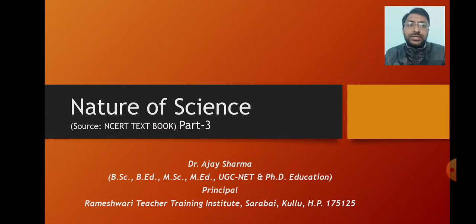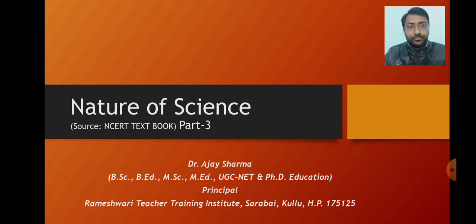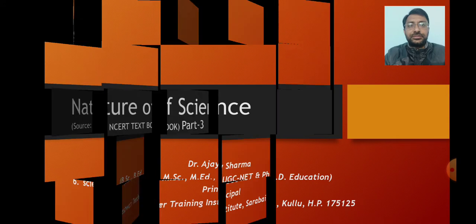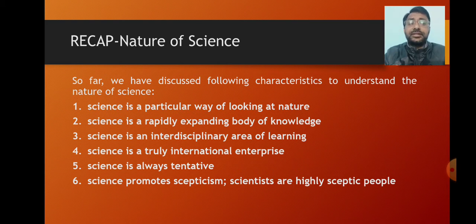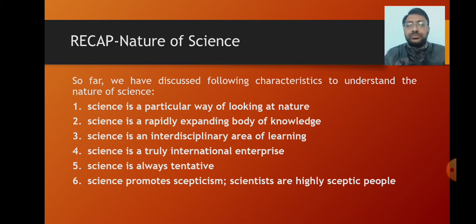As you all are aware, these days we are discussing the nature of science, and I have listed eight main characteristics to understand it properly. Out of the eight listed characteristics, we have already discussed the first six: 1. Science is a particular way of looking at nature. 2. Science is a rapidly expanding body of knowledge. 3. Science is an interdisciplinary area of learning. 4. Science is a truly international enterprise. 5. Science is always tentative. 6. Science promotes skepticism and scientists are highly skeptic people.